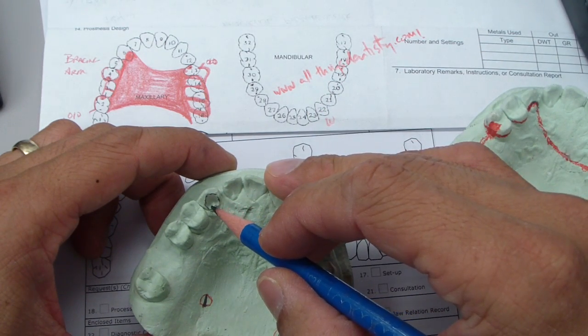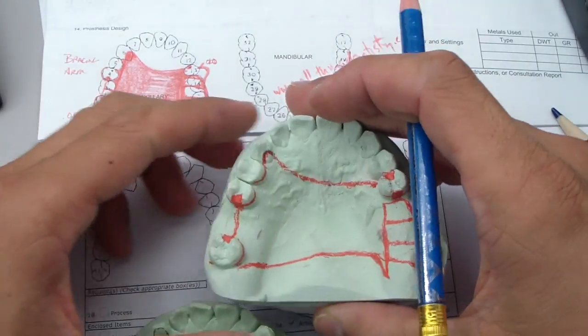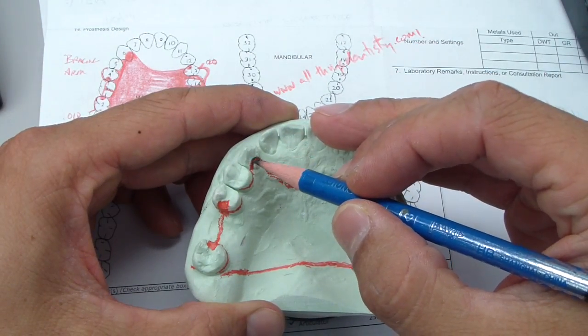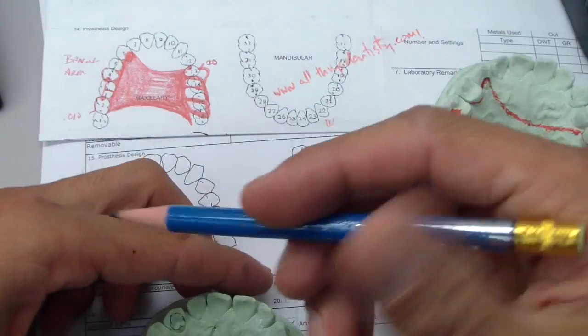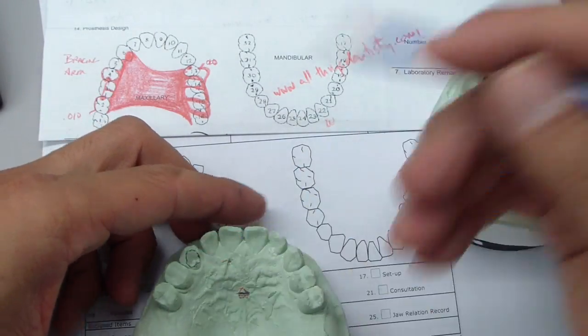Now in hindsight, I probably would have just built this up in composite. You can see the original cast here - built it up in composite and used that just as its rest seat. But here we are, so this is my indirect retainer.